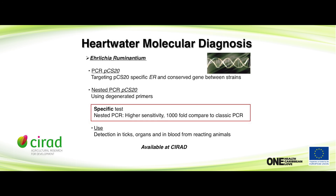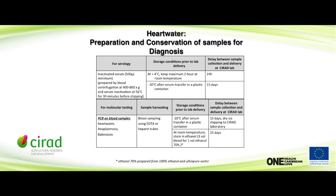For serological analysis, you need clear inactivated serum. For PCR, you can use blood samples stored at minus 20°C. If you don't have that possibility, you can keep it at room temperature provided you add one volume of 70% ethanol to three volumes of blood.